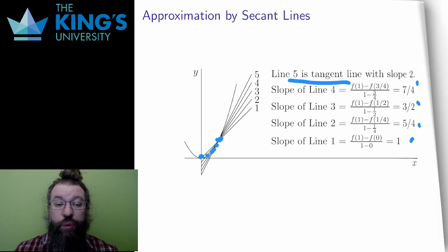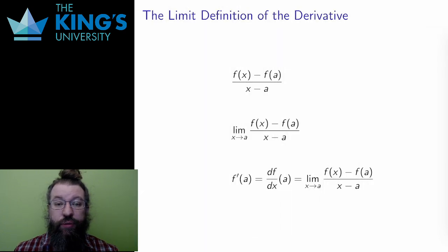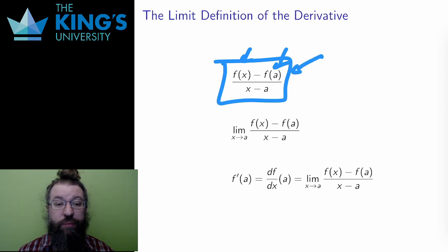If the two values were x and a, using a to indicate that one of these values is fixed and x to indicate that one of these is moving, then the slope of the secant line was the difference in the y-coordinates, the output, f(x) minus f(a), over the difference in the x-coordinates, the input, x minus a.